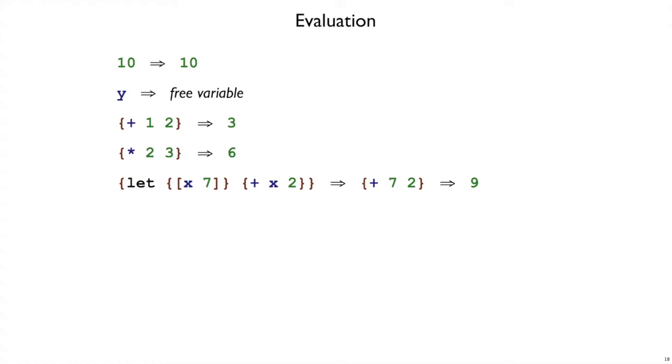So let's look at evaluation, how that has to work with our extended grammar. If we evaluate 10, we should get 10 back. If we evaluate y by itself and not inside any sort of let or lambda, then we will get a free variable error as before. Plus should continue to add, times should continue to multiply. Let should continue to bind a variable to the result of some right-hand side. So x here is 7, and when we add it to 2, then conceptually what happens is that we substitute that 7 in place of the x, add 7 to 2, that way to get 9.